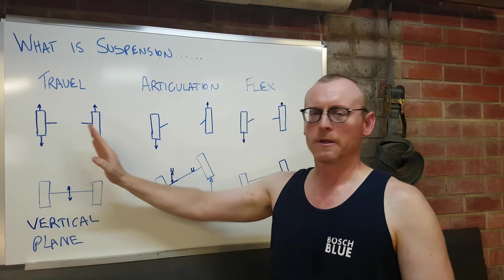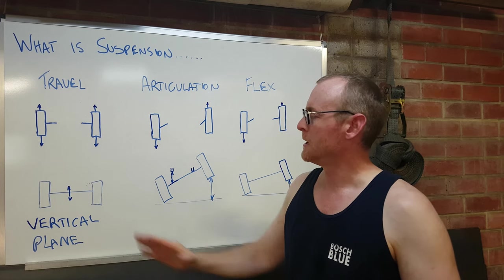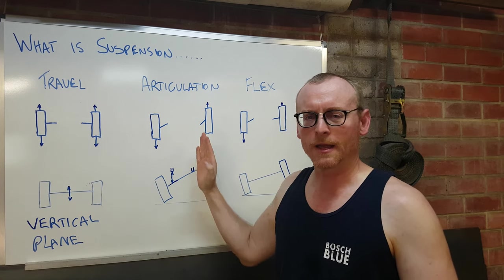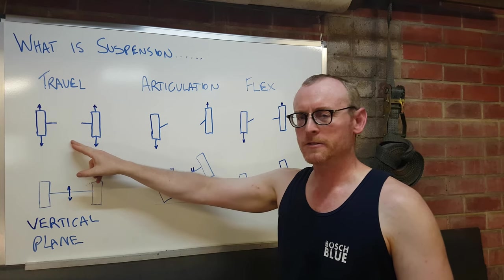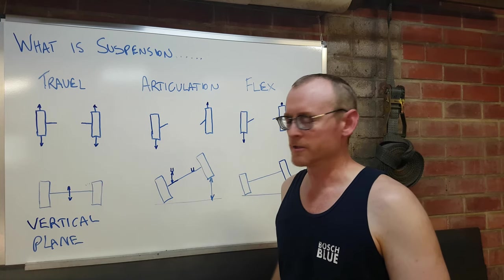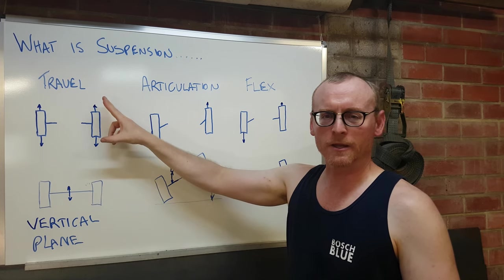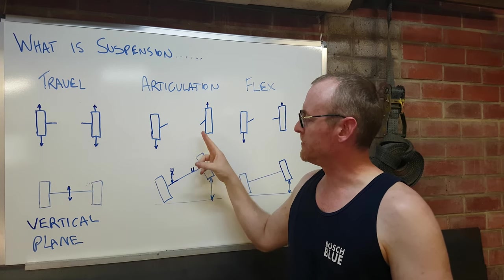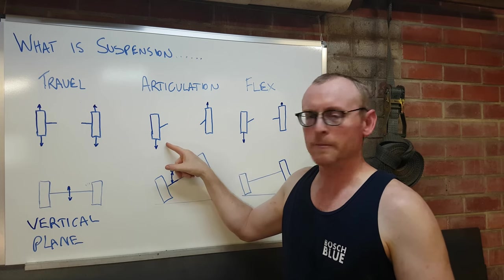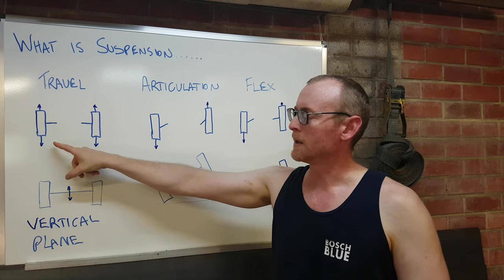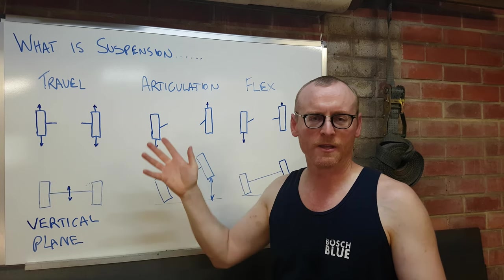In the case of independent suspension, travel equals articulation. The amount that this one goes up, as represented here, is the same, and the amount that this one goes down, as represented here, is the same. So they're equal.